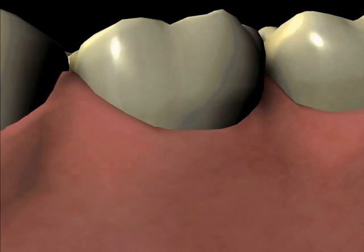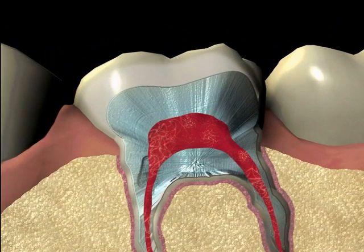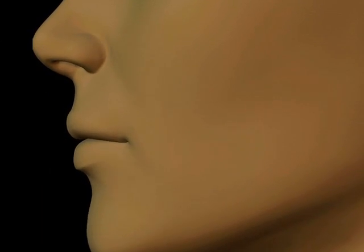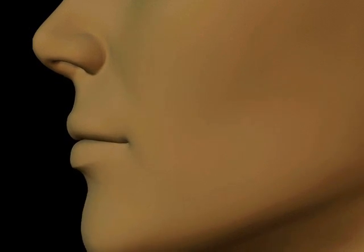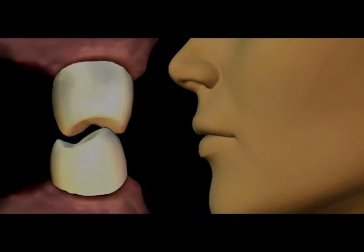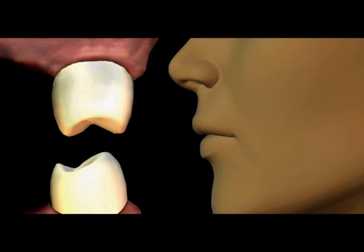The bone making up your upper and lower jaw functions to hold your teeth in place, much like the dirt around a fence post. The forces applied to your teeth are directly transmitted to the bone. Not only does this make your bite feel solid, but the chewing forces being transmitted directly to the bone stimulates the bone to continue supporting the teeth.